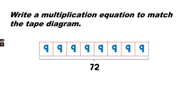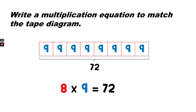Write a multiplication equation to match the tape diagram. Notice that there are 1, 2, 3, 4, 5, 6, 7, 8 boxes — so that's 8 groups of 9 in each box, and there are 72 in all. 8 times 9 equals 72.